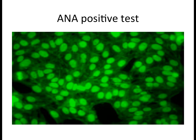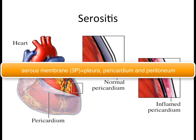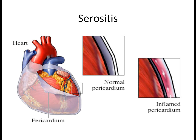You will also see positive anti-nuclear antibodies on testing. SLE can also affect the serous membranes — remembered as the Triple P: peritoneum, pericardium, and pleura. For example, pericarditis can compress the heart and affect normal contraction. When the pleura is affected it can cause pleural effusion, and when the peritoneum is affected it can cause abdominal pain.